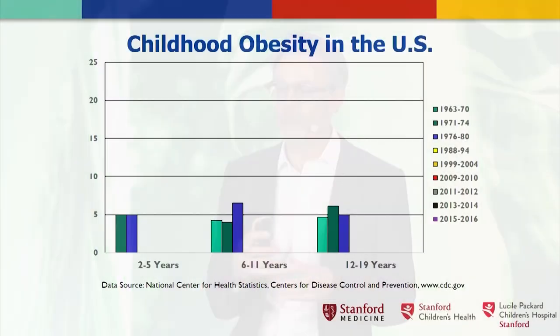We define obesity in children based on their body mass index, which is a measure of their weight divided by the square of their height, adjusting for body size. Because BMI normally increases with growth as kids get older, we also have to adjust it for age and sex. The CDC used the 1960s and 70s as the reference period — the 95th percentile of BMI for age and sex during that era — before the obesity epidemic began.